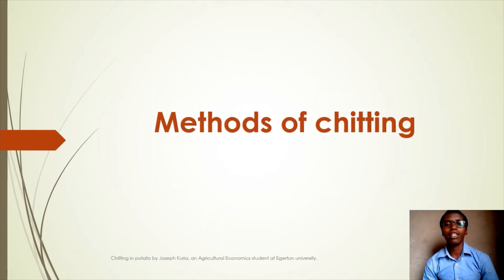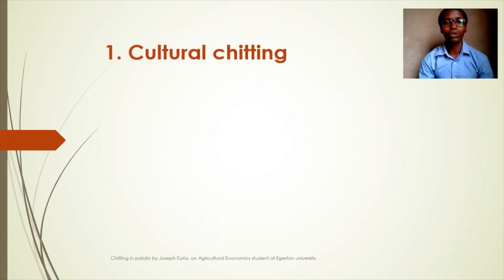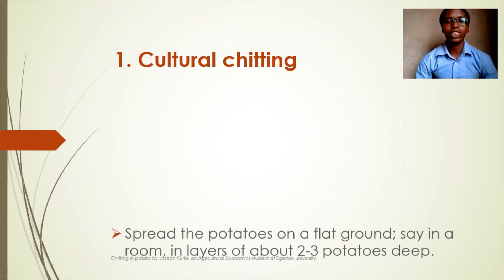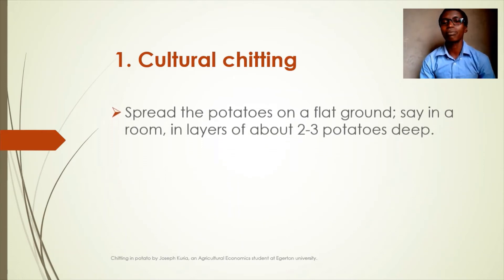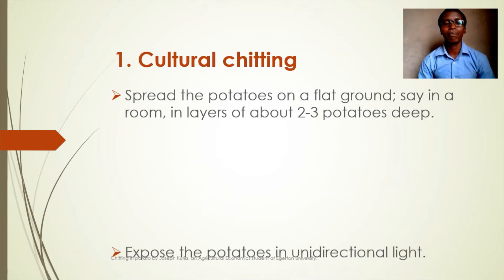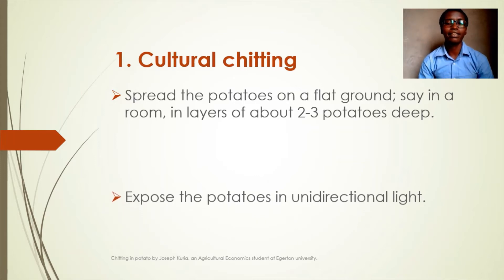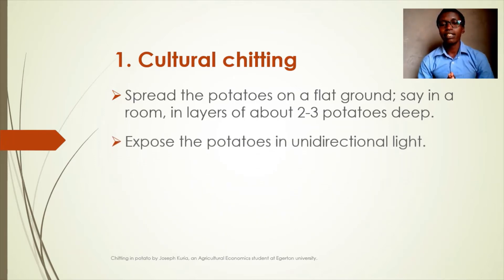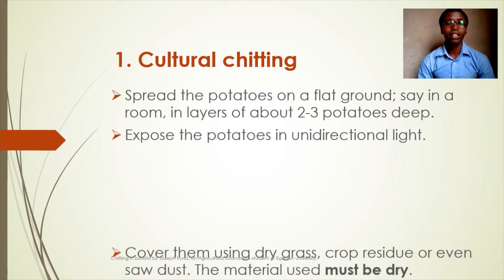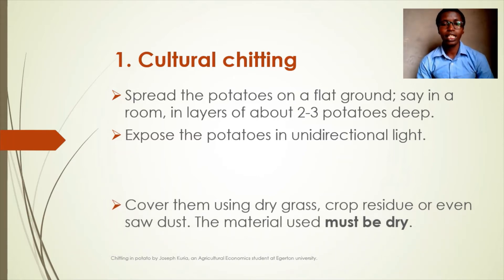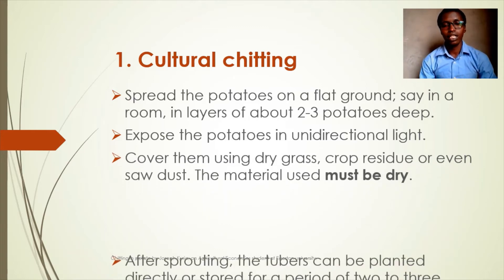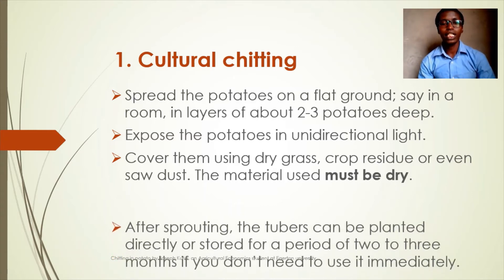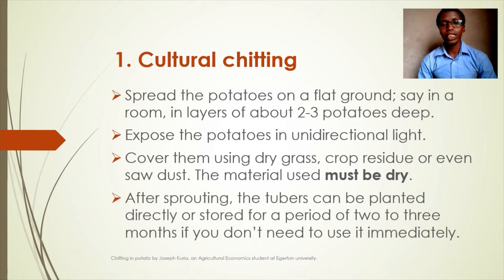So what are the methods of chitting? Chitting can be done in two main methods. The first one is the cultural method. This involves spreading the potatoes on a flat ground in a room in layers of about two to three. Expose the potatoes to unidirectional light, then cover them using dry grass, crop residue, or even soil dust to provide warmth, which is important for sprouting.